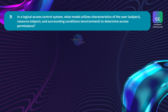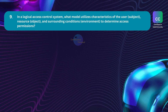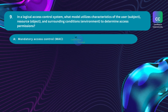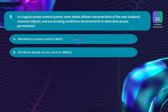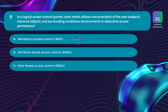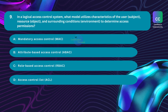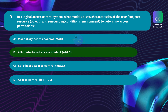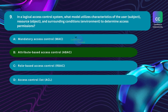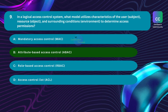Question number nine: in a logical access control system, what model utilizes characteristics of the user, resource, and surrounding conditions to determine access permissions? Option A: mandatory access control. Option B: attribute-based access control (ABAC). Option C: role-based access control (RBAC). Option D: access control list (ACL). The correct answer is option B: attribute-based access control (ABAC) — a logical access control model that utilizes characteristics of the user, resource, and surrounding conditions to determine access permissions.